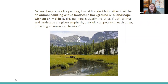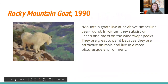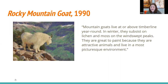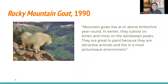Tucker says: 'When I begin a wildlife painting, I must first decide whether it will be an animal painting with a landscape background or a landscape with an animal in it. If both animal and landscape are given emphasis, they will compete with each other, providing an unwanted tension.' Here is an example of an animal painting with a landscape background — this animal is important because he's very big, takes up a good portion of the canvas, he's closer to us, harder lined, has more texture, while the background is a little softer, a little more fuzzy and grayed out. Mountain goats live at or above timberline year round and are great to paint because they are attractive animals and live in the most picturesque environment.